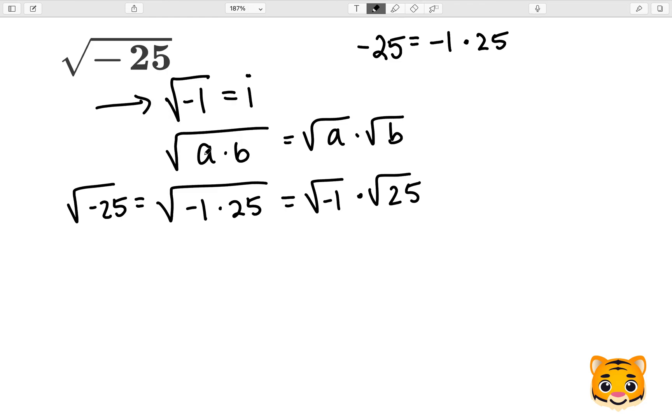Now we can see using our rule from before, the square root of negative 1 is just i. And then, knowing that 5 times 5 equals 25, we can rewrite the square root of 25 as 5.